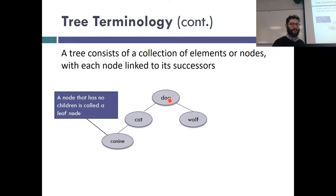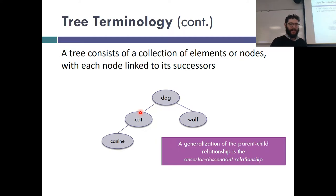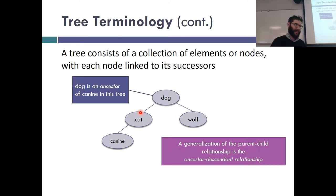A node that has no children is called a leaf node — if you're at the opposite side of the root, you're a leaf. Canine is a leaf, wolf is a leaf, because those two nodes don't have children. Cat isn't a leaf node because it has one child. We can also call them external nodes, but leaf is quicker to say. Non-leaves can be referred to as internal nodes. Dog is the ancestor of canine, and canine is the descendant of dog.